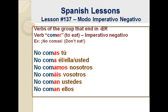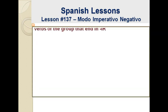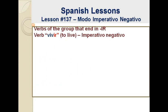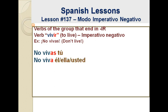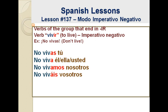Let's jump now to the third and last group of Spanish verbs — the verbs that end in IR. We will take as an example the regular verb vivir, or to live. Example: no vivas — don't live. No vivas tú — you do not live; no viva él, no viva ella, no viva usted; no vivamos nosotros; no viváis vosotros; no vivan ustedes; no vivan ellos.